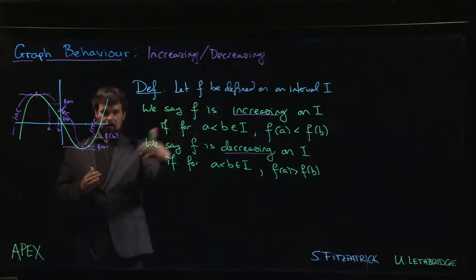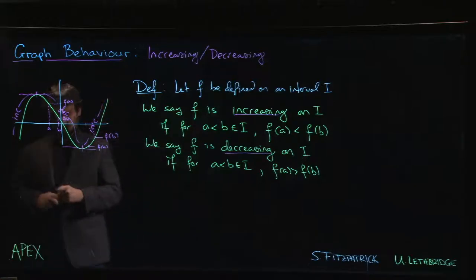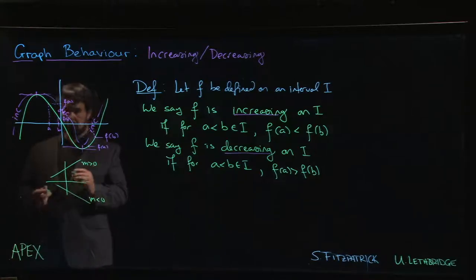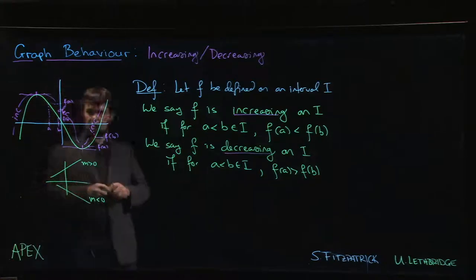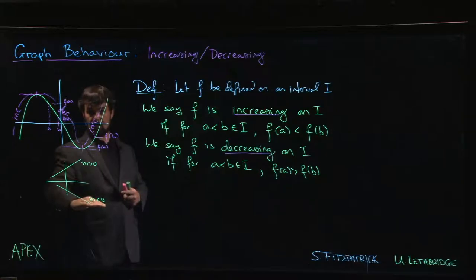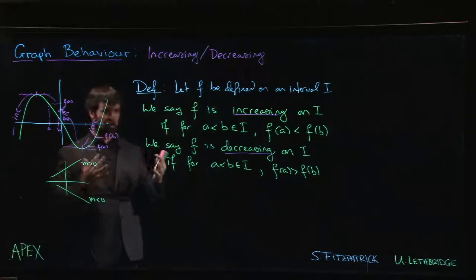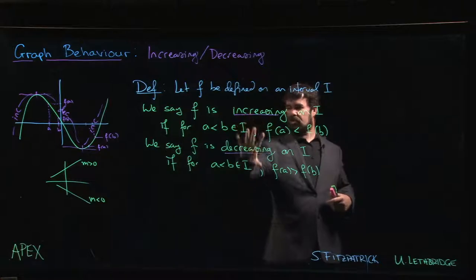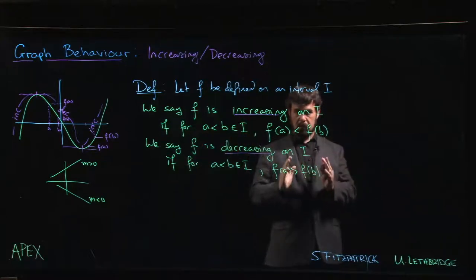Think about what it means for a line to be increasing: a line is increasing if it has positive slope, and decreasing if it has negative slope. For a curve that has a tangent line at every point, we can make similar statements about the slopes of those tangent lines, and that's going to allow us to relate increasing and decreasing to the derivative. But note: the definition of increasing and decreasing here makes no mention of the derivative yet — the derivative comes in through a theorem, and that's going to be our next video.